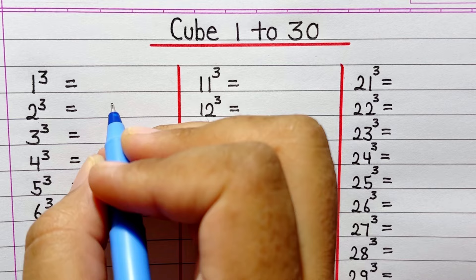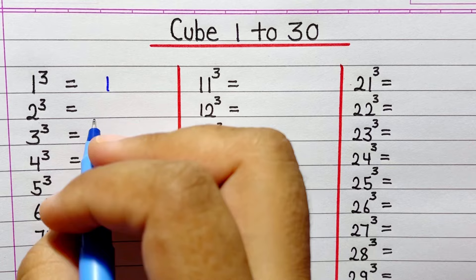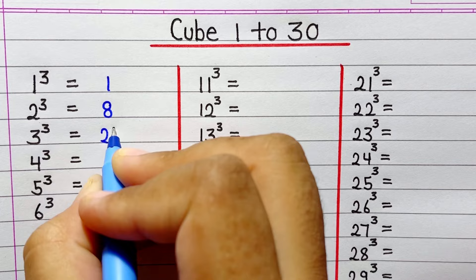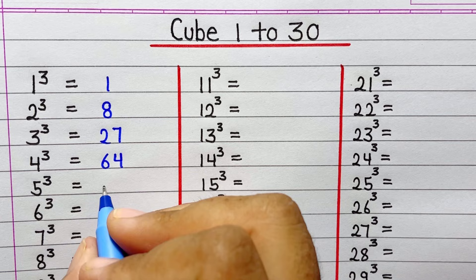Cube of 1 is 1. Cube of 2 is 8. Cube of 3 is 27. Cube of 4 is 64. Cube of 5 is 125.